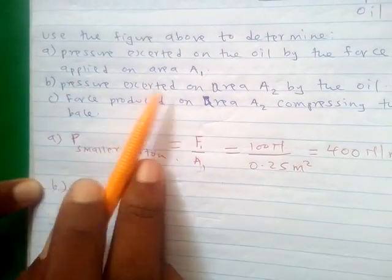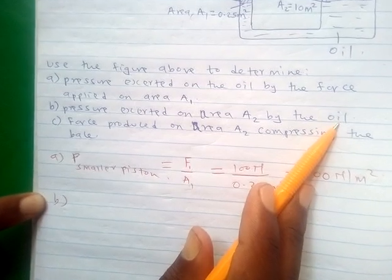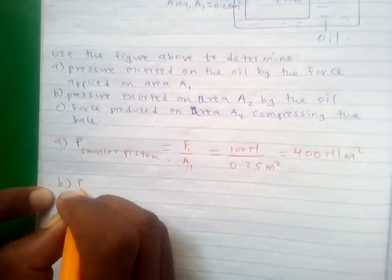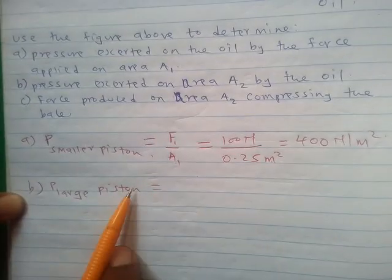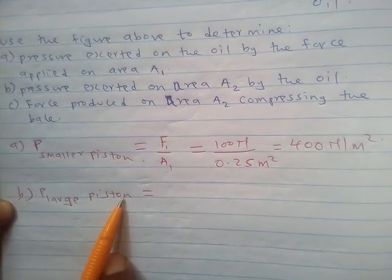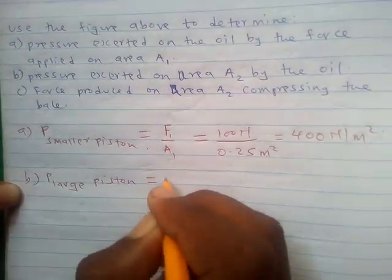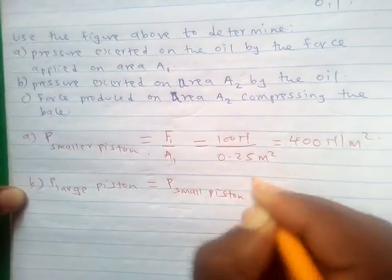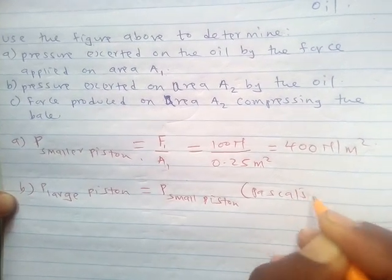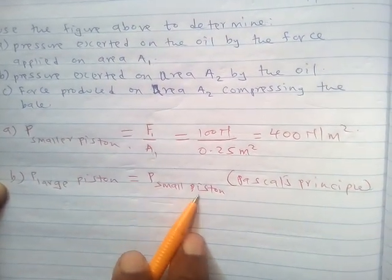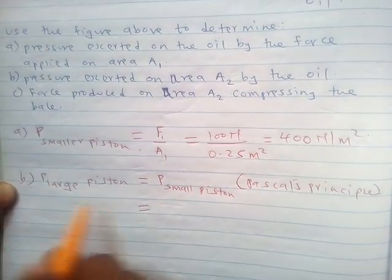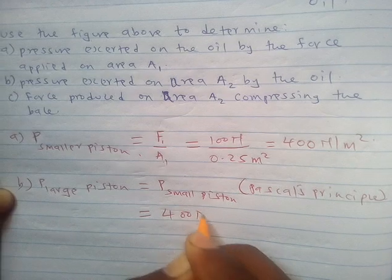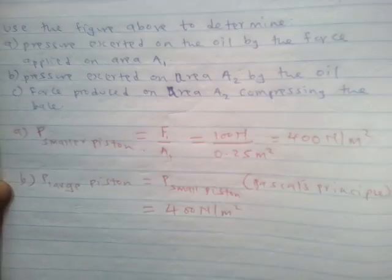For part B, they want the pressure exerted on area A2 by the oil, which is at the larger piston. From Pascal's Principle, pressure must be equally distributed through the liquid, so the pressure at the large piston must equal the pressure at the small piston. Since pressure at the smaller piston is 400 Newton per meter square, the pressure at the large piston is also 400 Newton per meter square.